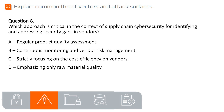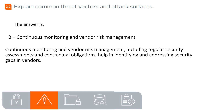Question 8. Which approach is critical in the context of supply chain cybersecurity for identifying and addressing security gaps in vendors? A. Regular product quality assessment, B. Continuous monitoring and vendor risk management, C. Strictly focusing on cost efficiency with vendors, D. Emphasizing only raw material quality. The answer is B. Continuous monitoring and vendor risk management. Continuous monitoring and vendor risk management, including regular security assessments and contractual obligations, help in identifying and addressing security gaps in vendors.